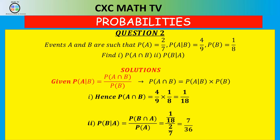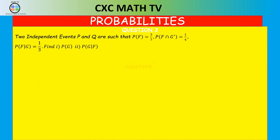Now let's look at this question. It says: given that P(F) = 3/7, P(F∩G') = 1/4, and P(F|G) = 1/3, find the probability of G and then find the probability of G given F. Go ahead, pause and attempt this question.